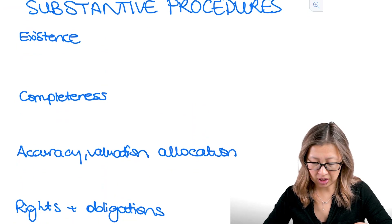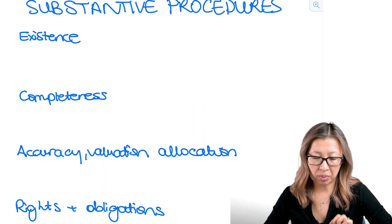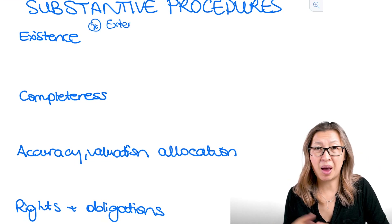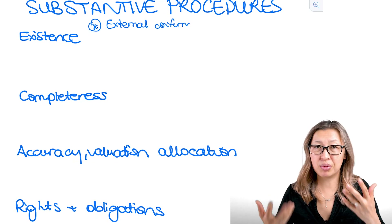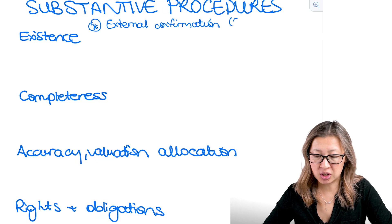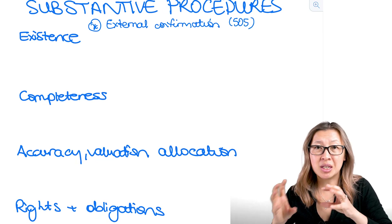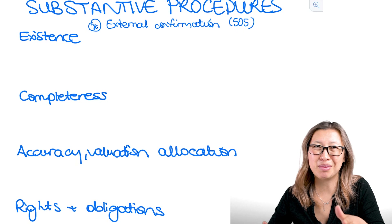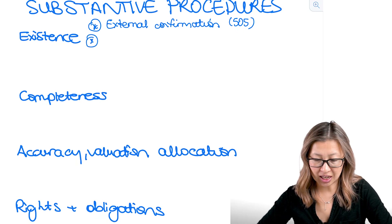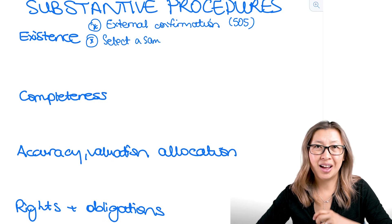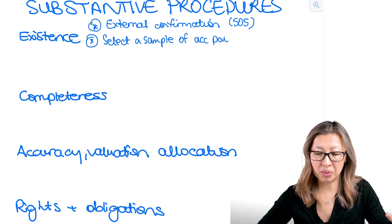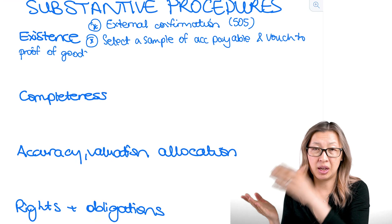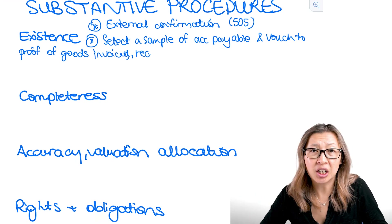When it comes to existence, we need to make sure we're doing all the right things — those four rules. I need to think about potentially writing an external confirmation, sending a confirmation to the supplier that we owe them money — our accounts payable. So we've got the external confirmation as the first thing we can do here. Now, you might not get a reply to your confirmation, so we want to select a sample of accounts payables and vouch them. Take the journal for accounts payable or the balance and vouch it back to proof that we actually bought something.